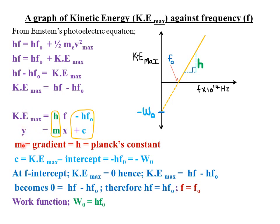Comparing directly, m — which represents the gradient or slope — equals Planck's constant h. So if you want to find Planck's constant, simply find the gradient of this graph. The value of c, which represents the KE max intercept or y-intercept, equals −hf₀. Since hf₀ represents the work function, c = −W₀. The point where the line cuts the KE max axis gives the negative of the work function.